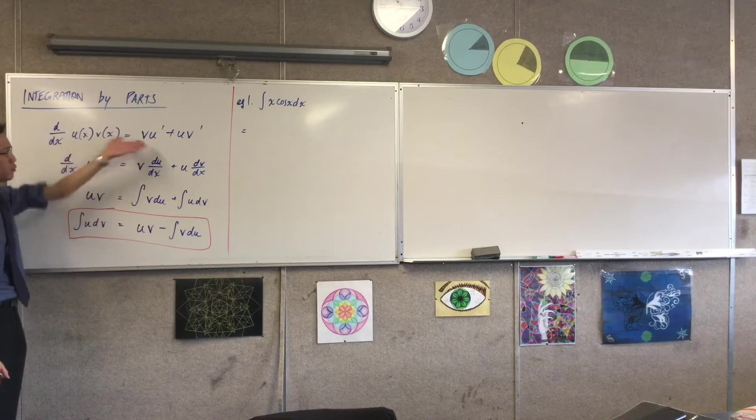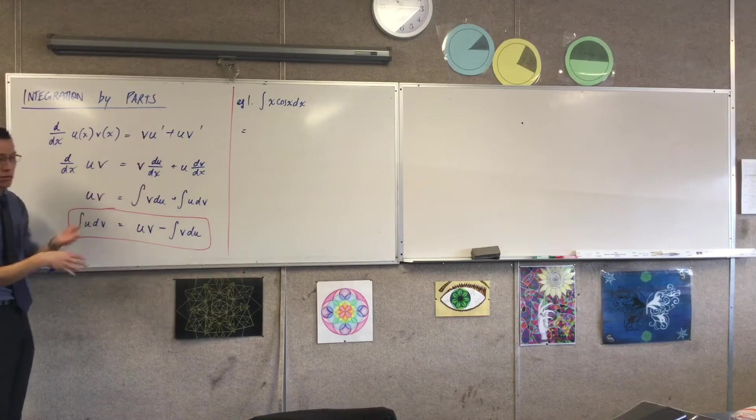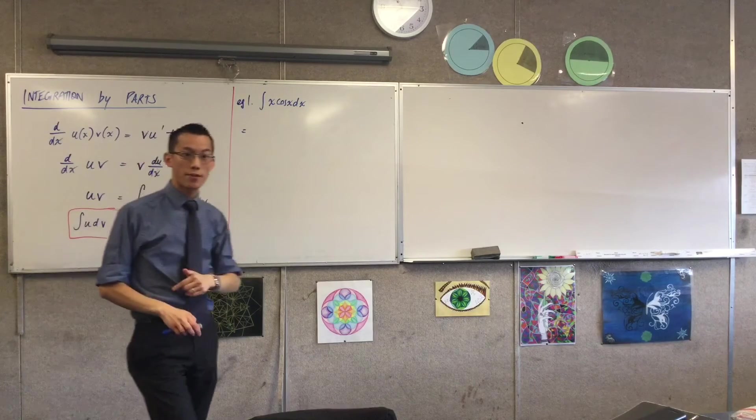For the regular product rule, what you end up with is symmetrical in u and v, so whichever. But here, you have to be careful.